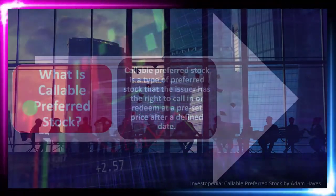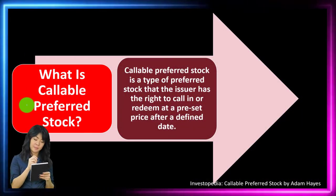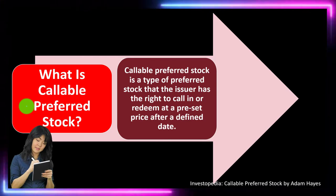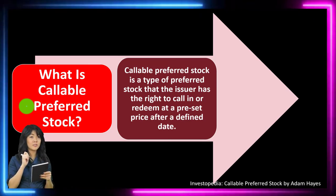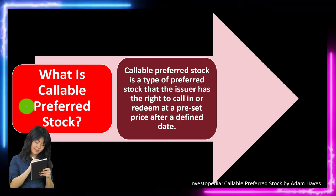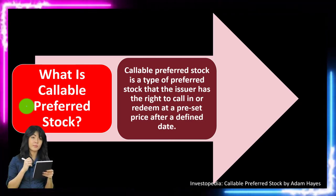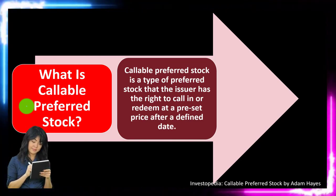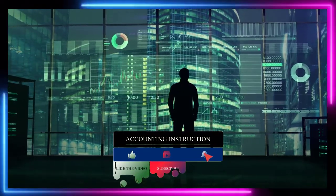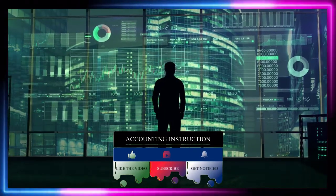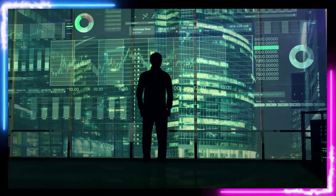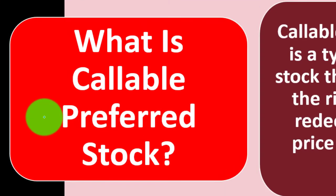Preferred stock — setting aside the callable component for now — sits on the equity side of things. They're preferred because dividends must be paid to preferred stockholders before any dividends are paid to common stockholders. In a liquidation, preferred stockholders are also paid first. However, preferred stock is not better than common stock, because if the economy and business do well, common stockholder value typically increases more. Preferred stock dividends are more guaranteed, making them similar to a fixed income or bond.